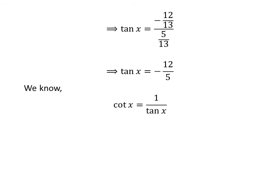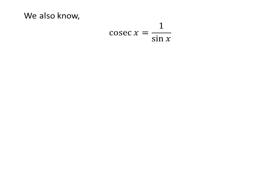We know the reciprocal of tangent of x is cotangent of x. So cotangent of x is equal to minus 5 upon 12. We also know 1 upon sine of x is equal to cosecant of x. So cosecant of x is equal to 1 upon minus 12 upon 13, which is equal to minus 13 upon 12.